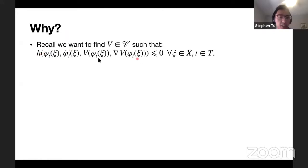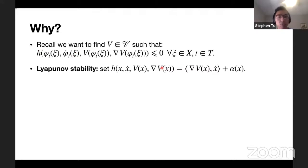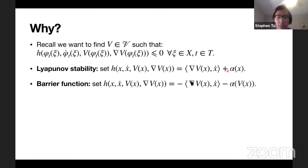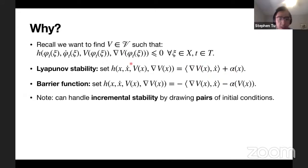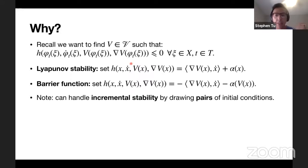Tying these to the evaluation function h: if we care about Lyapunov stability, we set h to be the inner product of grad V and x-dot plus the class-K function α. For barrier functions, we negate that quantity. Incremental stability — convergence of pairs of trajectories toward each other — also falls within this general framework. This is a very general framework for getting certificate-type guarantees in control.